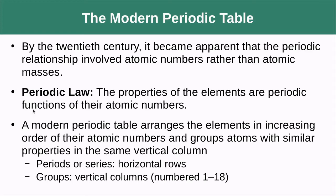As we move on to the modern periodic table, one of the big differences is that we moved away from mass, realizing the relationships really involved atomic numbers. Our modern periodic table arranges elements in increasing order of atomic numbers and groups elements of similar properties into the vertical columns of the table.